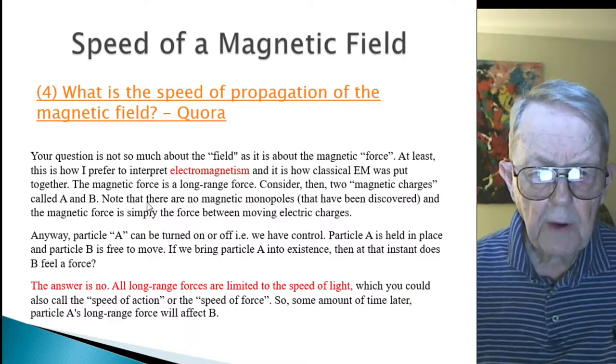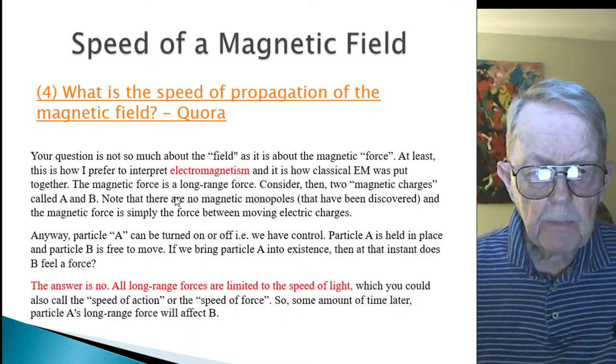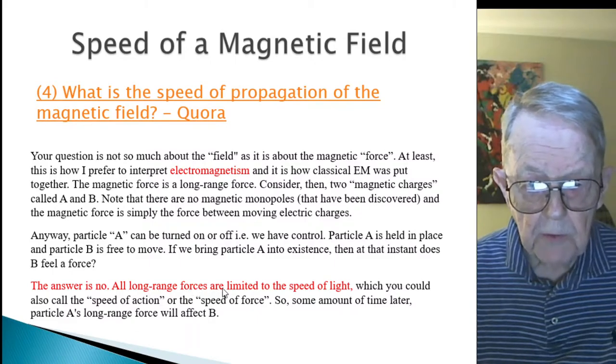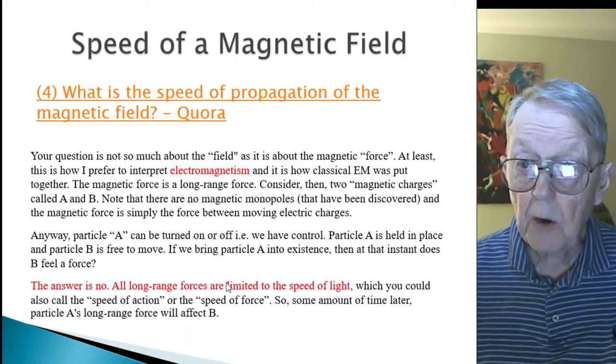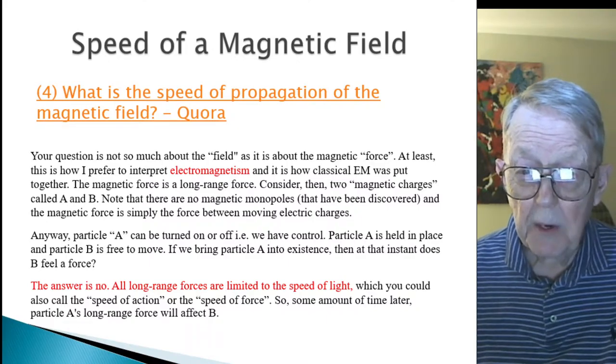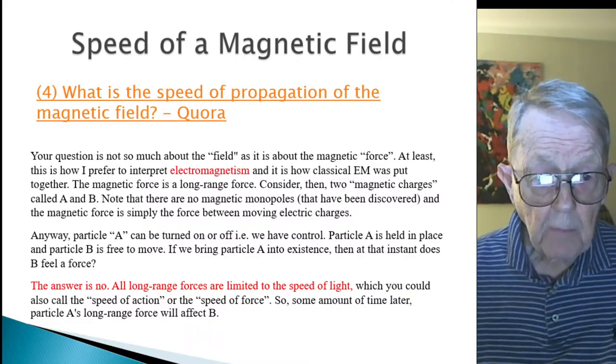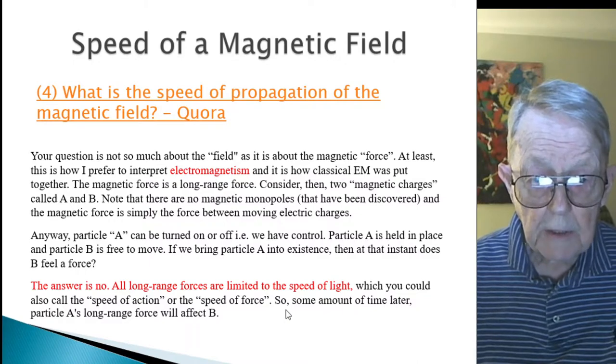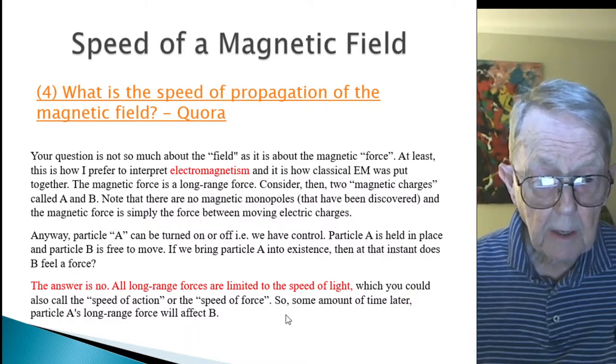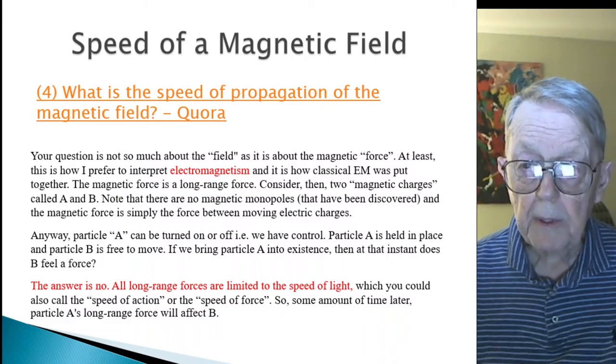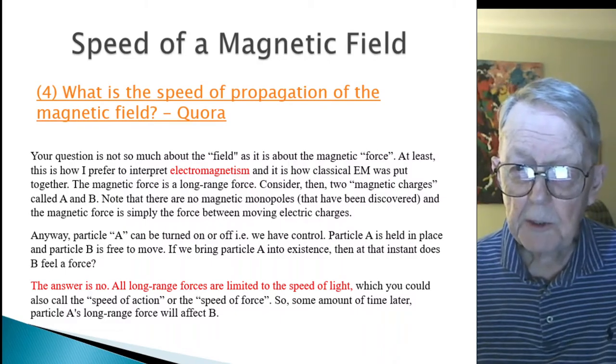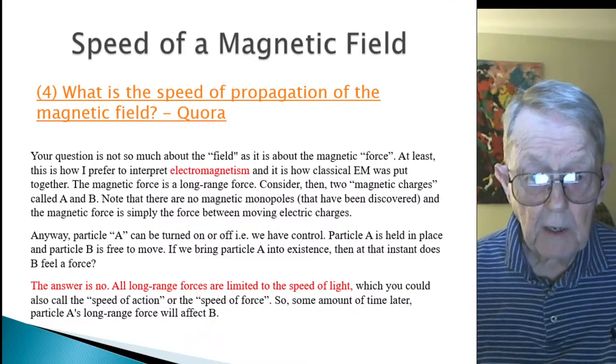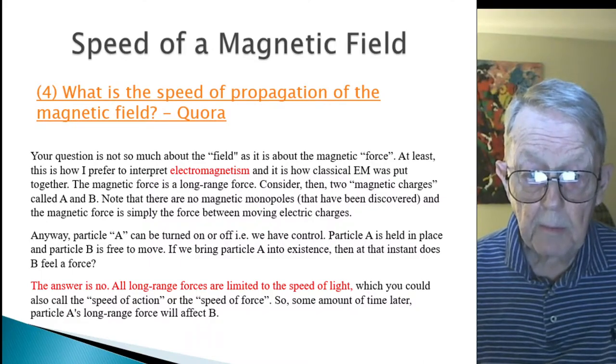All long-range forces are limited to the speed of light. They're defining magnetic force as a long-range force, and if it's a long-range force, they are limited to the speed of light. It can't go faster. It's not saying what it is, it's just saying you can't go faster, which you could also call the speed of action or the speed of force. Some amount of time later, particle A's long-range force will affect B. Well, it's not the speed. He's saying it's finite, but not faster than light. That's part of relativity.